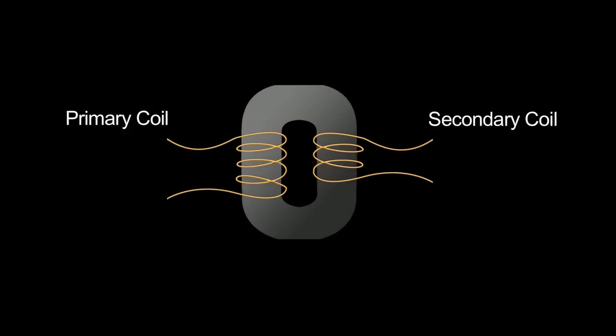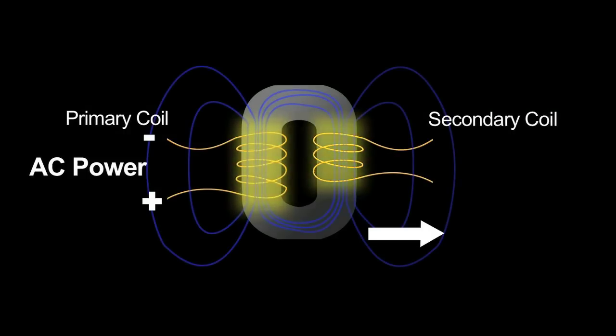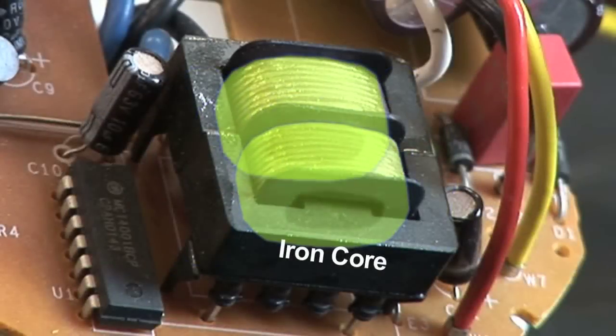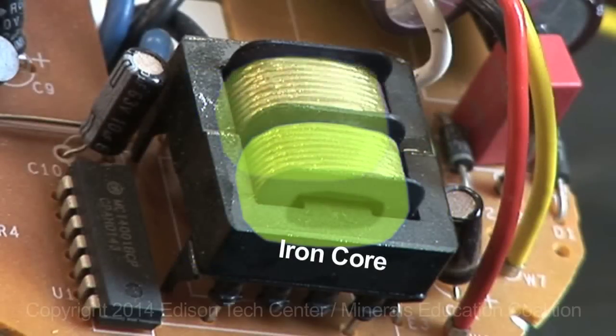Transformers use an iron core to transfer magnetic energy from one coil to another through magnetic induction. The iron core is made in different ways.